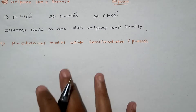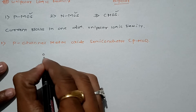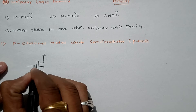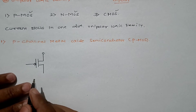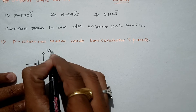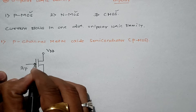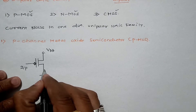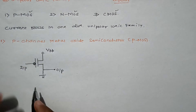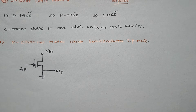As far as the symbolic representation and its working principle is concerned, the P-channel Metal Oxide Semiconductor is represented as follows: the drain voltage is connected at the top, the input is connected here — it is complementary — and the output is taken at the bottom. This is the symbolic representation of PMOS.